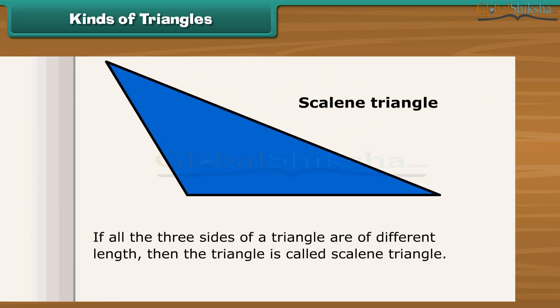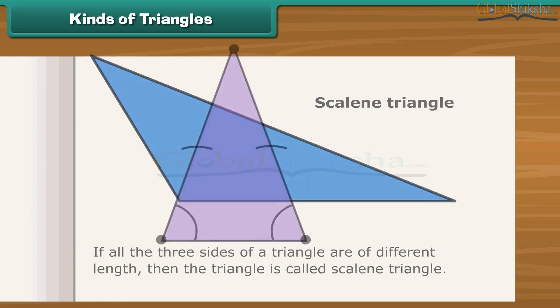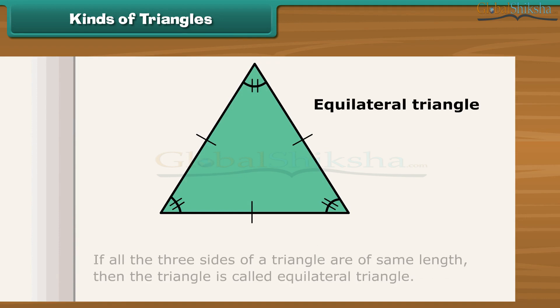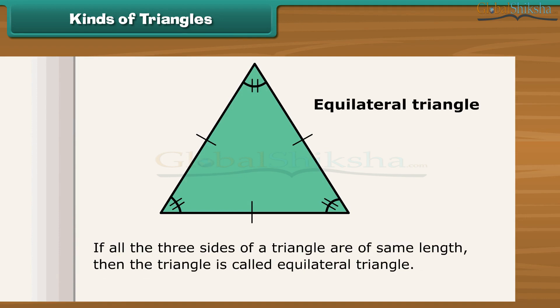If all three sides of a triangle are of different lengths, then the triangle is called a scalene triangle. If two sides of a triangle are of the same length, then the triangle is called an isosceles triangle. If all three sides of a triangle are of the same length, then the triangle is called an equilateral triangle.